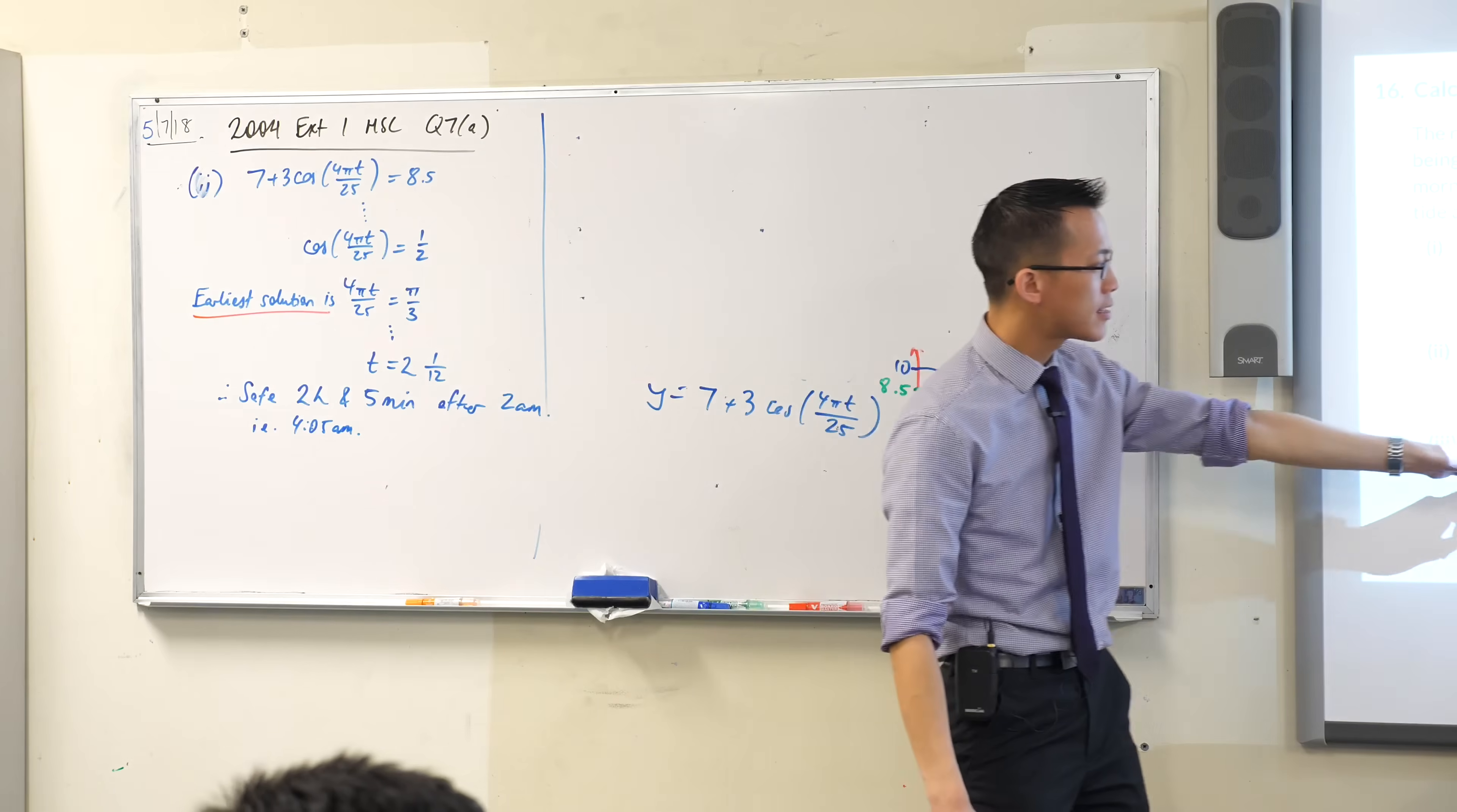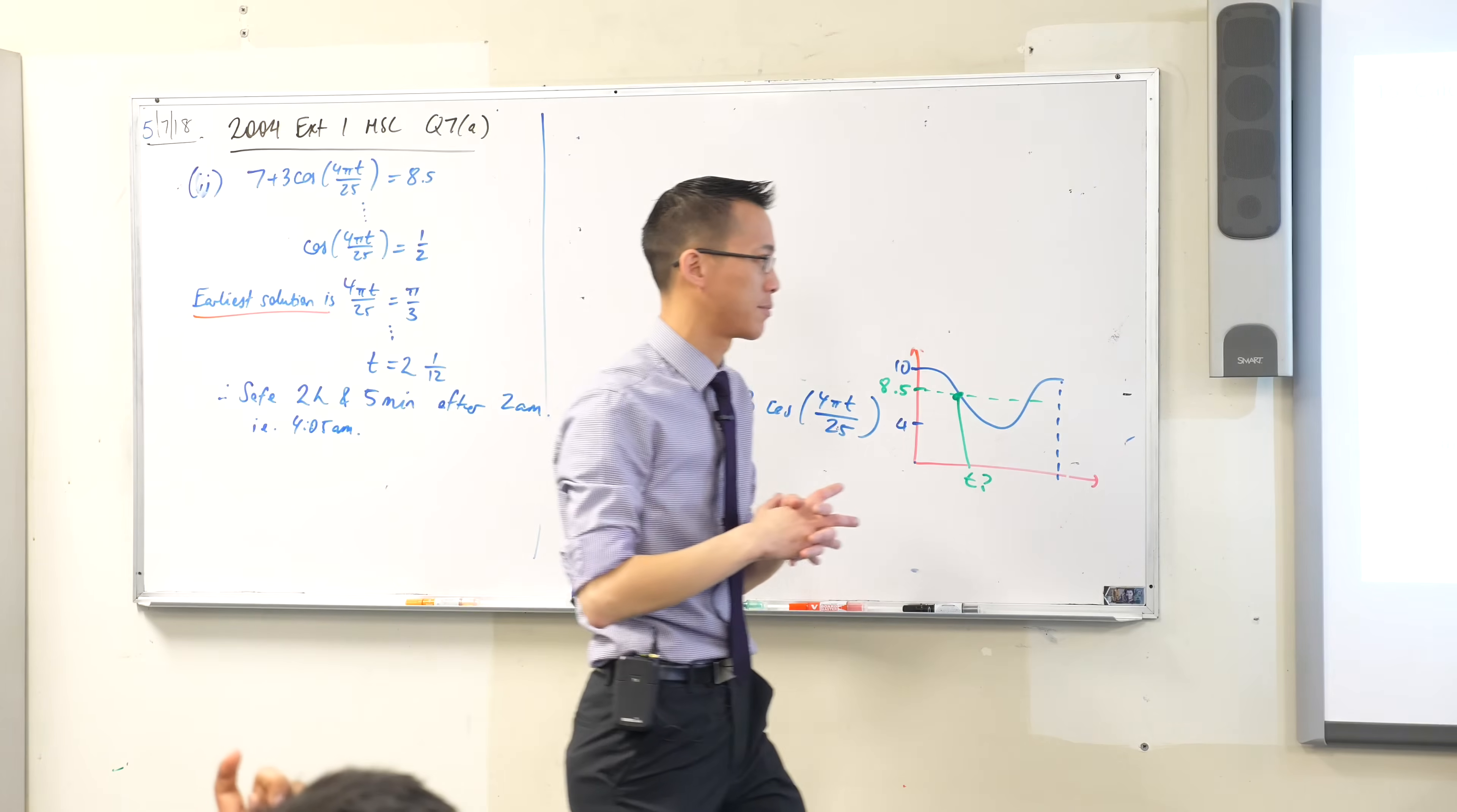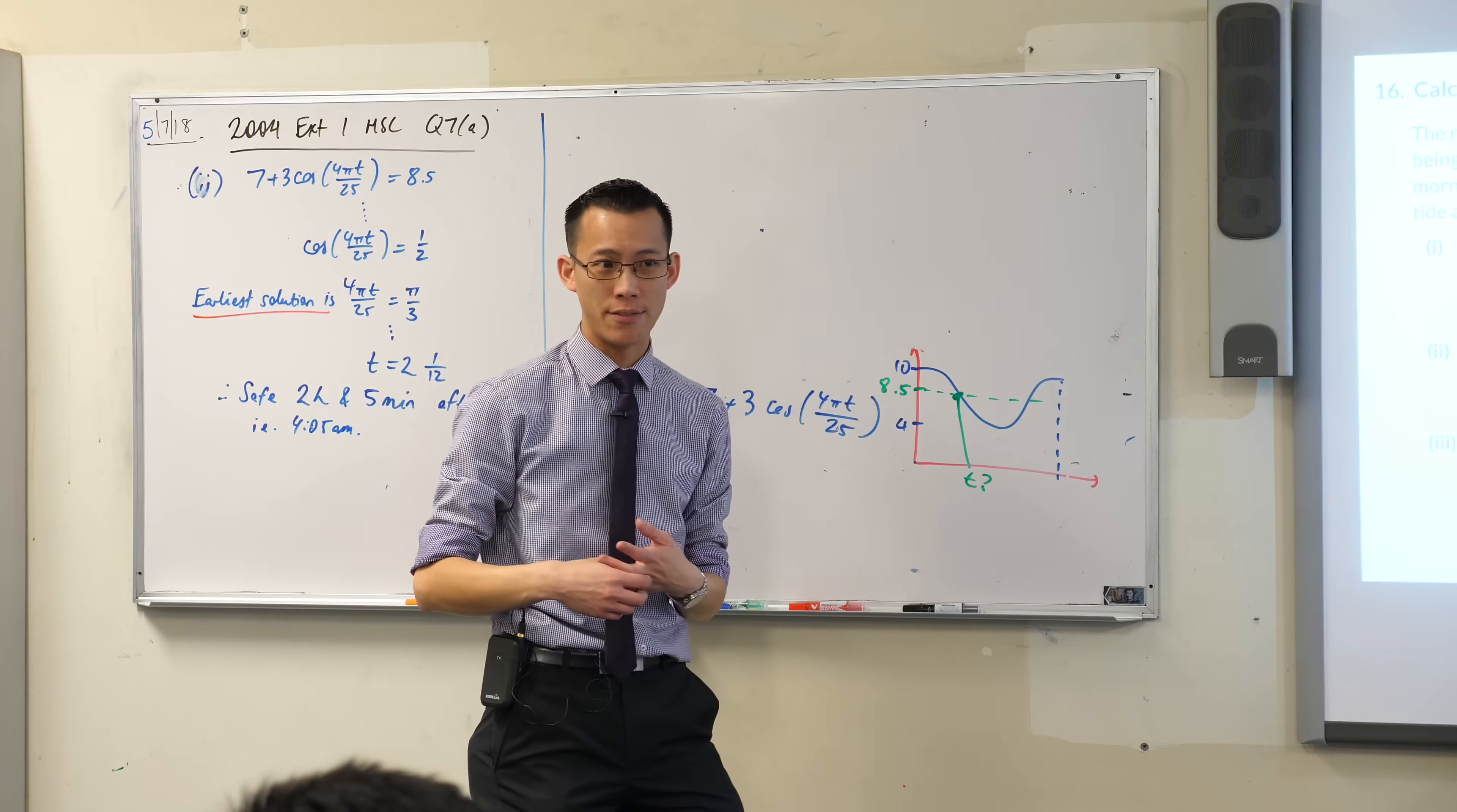However, tides at the harbour entrance occur an hour earlier than the wharf, so it takes some time for the wave to actually reach and change. In order for the ship to be able to sail through the shallow harbour entrance, the water level must be at least two meters above the low tide level.